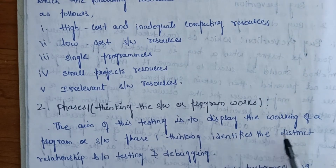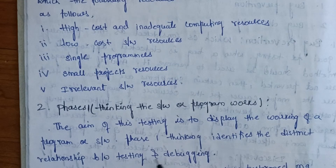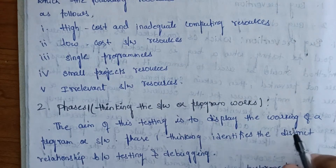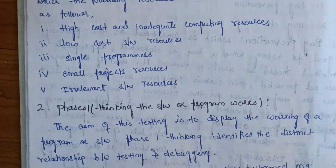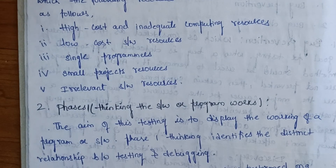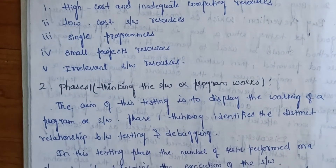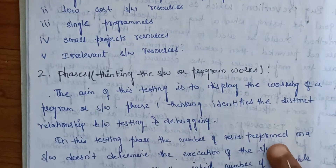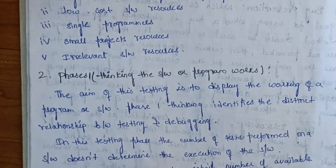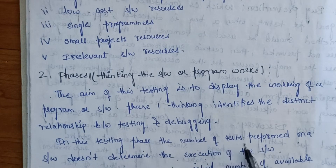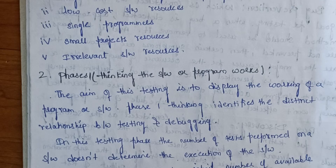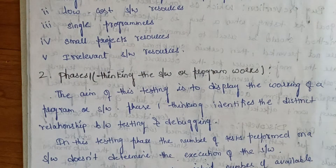Phase 1 thinking identifies the distinct relationship between testing and debugging. In this testing phase, the number of tests performed on software does not determine the execution of the software.